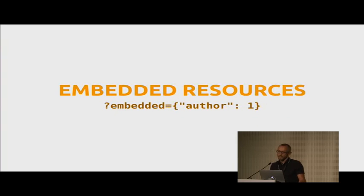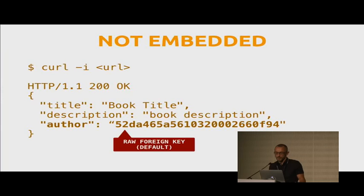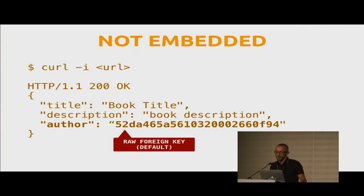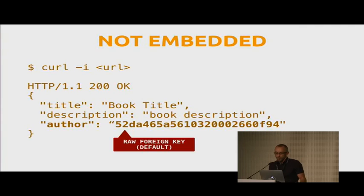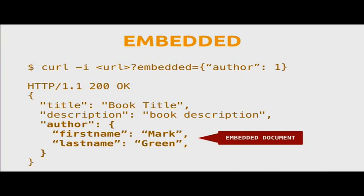Another very cool feature is embedded resources. Here we are asking to embed the author field. By default, when you get a document you will get the author field as a foreign key to maybe another endpoint. But if you send a request with the embedded keyword, what you get is an embedded document with the full author. This avoids sending two requests for the data you need on your client.